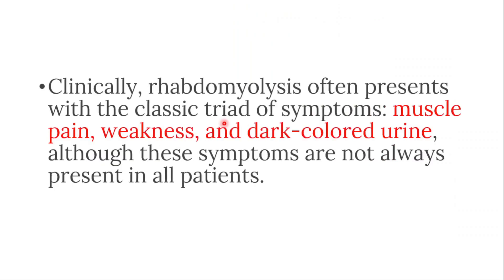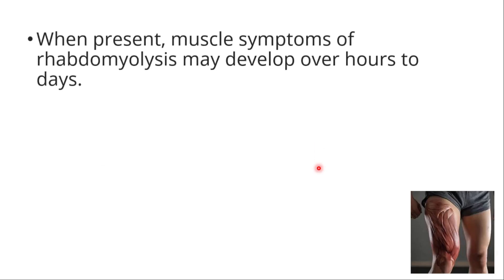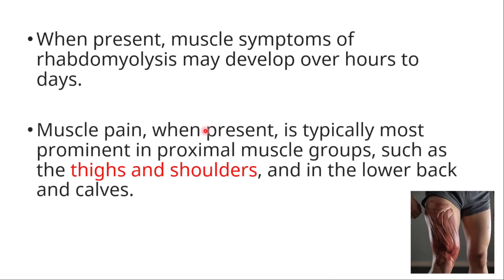Clinically, we have a triad of symptoms — three main symptoms that we see with Rhabdomyolysis: muscle pain, weakness, and dark-colored urine, although the symptoms are not always present in all patients. When present, muscle symptoms may develop over hours to days, and muscle pain is typically most prominent in proximal muscle groups like thighs and shoulders, and in the lower back and calves.